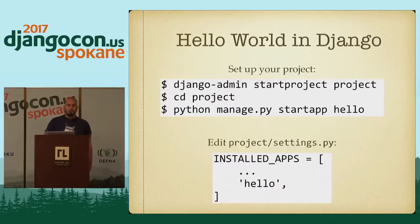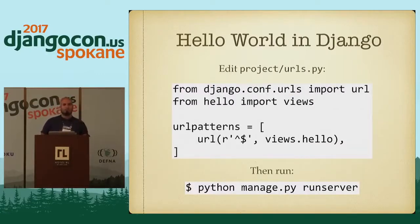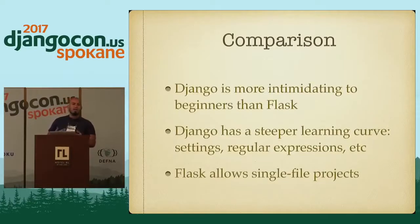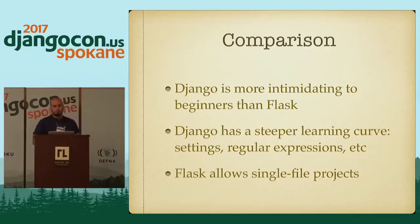By contrast, if you want to do Hello World in Django, you start by installing Django and running django-admin startproject. You go into your project, make your hello app, put it into settings.py, write your hello view — which requires importing HttpResponse and returning it — and then deal with urls.py, which means writing regular expressions, always a pain especially for beginners. I've found that Django is more intimidating to beginners than Flask. Django has a steeper learning curve because of settings, regular expressions, and the concept of projects versus applications. Flask is much simpler — you can have your entire project in a single file. Flask wins on simplicity for getting started.